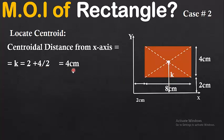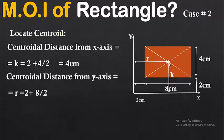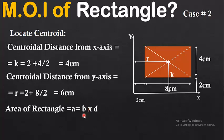So k = 2 + 4/2 = 4 cm. Similarly, the centroidal distance from the y-axis, r, equals 2 + 8/2 = 6 cm, where 2 is the horizontal offset and 8 is the base of the rectangle. The area remains A = 8 × 4 = 32 cm². Remember these values: k = 4 cm, r = 6 cm, A = 32 cm².